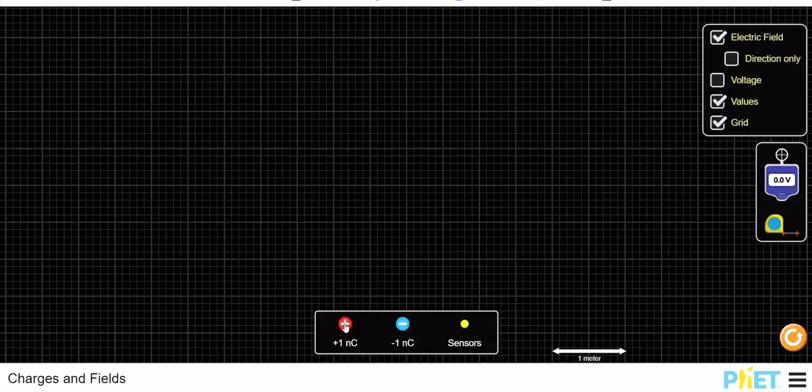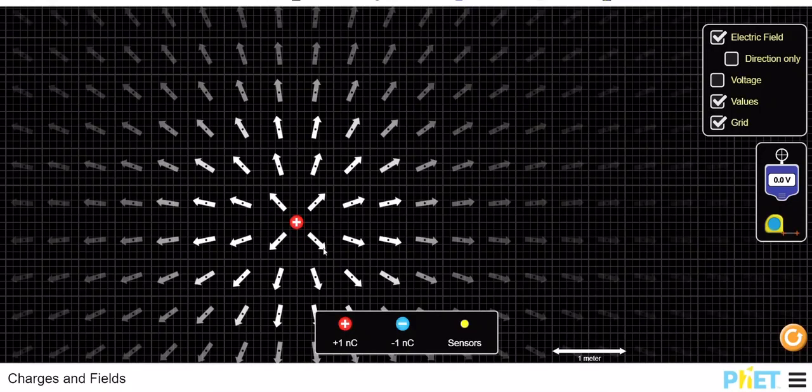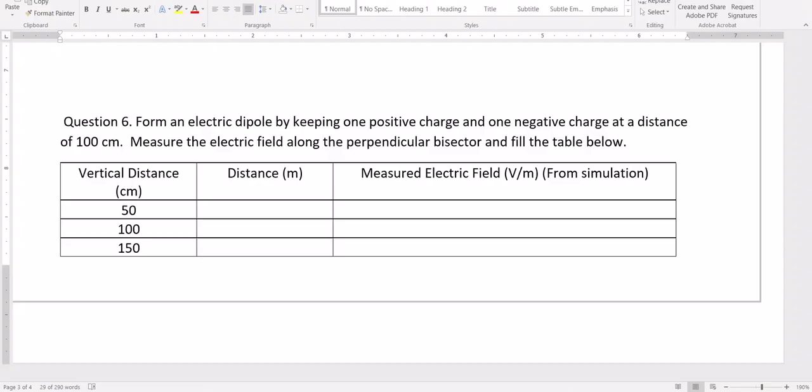Once you have this, select the positive charge and place it somewhere here. Make sure that you place the charge right at one of these edges of this square. The distance between the two charges of the electric dipole is 100 centimeters, that is one meter.